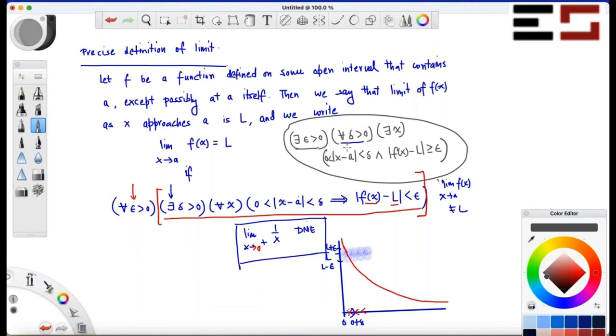But its image is more than epsilon distance away from L. Or in other words, that X lies in an interval a minus delta, a plus delta, but f of X doesn't lie in the interval L minus epsilon, L plus epsilon. Is that fine?